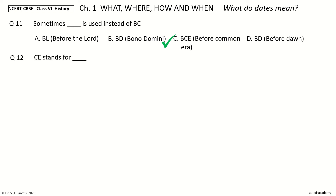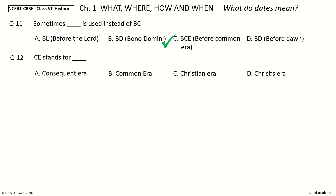Question 12. CE stands for dash. Your options: Consequent Era, Common Era, Christian Era, Christ Era. And the answer is Common Era.